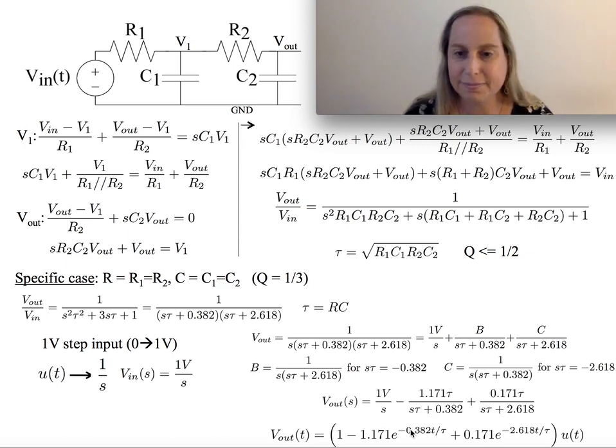This does in fact give me a steady state of one volt when t goes to infinity. It does give me a starting step right at zero, and then I get these two transient terms that kind of get me to an equilibrium. So this is how your step response would look.